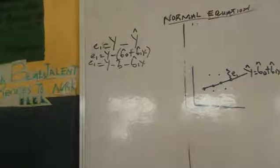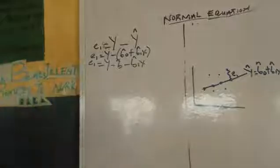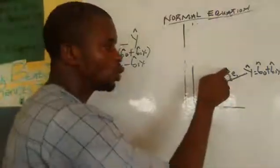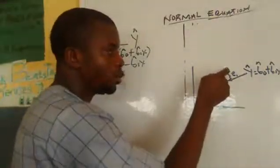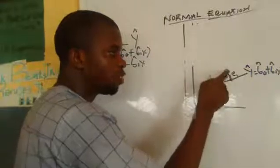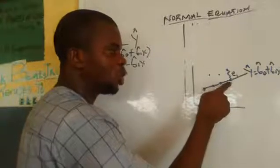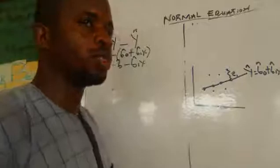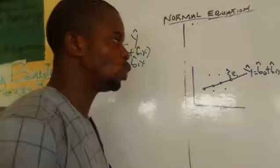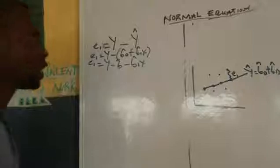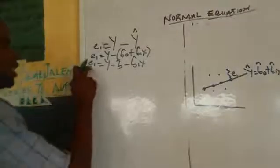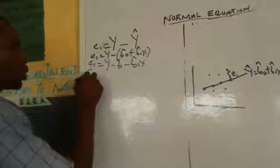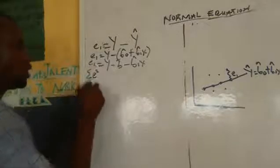We are trying to derive the normal equation of regression analysis. What we need to do is square and sum the deviation. We square because we don't want to get zero as the answer — subtracting observed minus estimated can cancel out. Squaring makes the values bigger, so when we sum and square the deviations, we avoid a zero result.